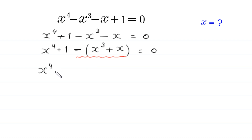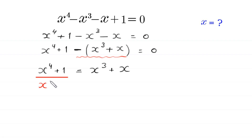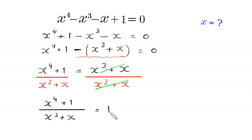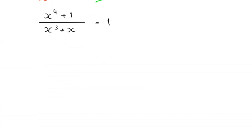Now we move the whole expression to the right-hand side, so the equation becomes x to the power 4 plus 1 is equal to x cubed plus x. From here, we divide both sides of this equation by x cubed plus x, so the x cubed plus x cancels out.